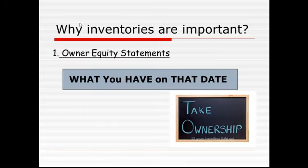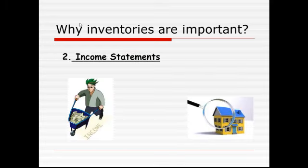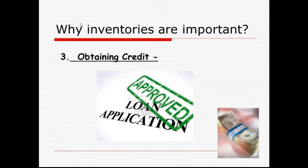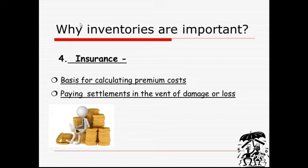How you use your inventories is important. You use them for owner's equity statements — what you have on that date. You can also look at income statements. Even though you deal with cash coming in and going out, you still have assets worth money to obtain credit. Banks will want collateral, and businesses often use their inventory as collateral — banks know they can sell off that inventory if you don't make good on your debt. Insurance companies also base your premium on your inventory and may mandate you keep it updated, which helps in case of damage or loss.